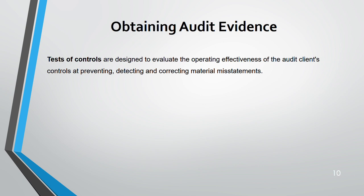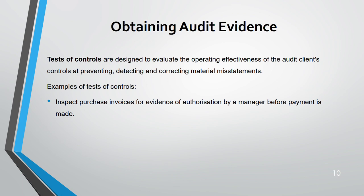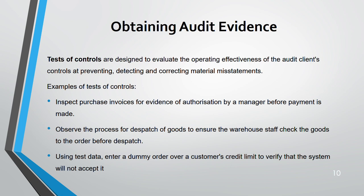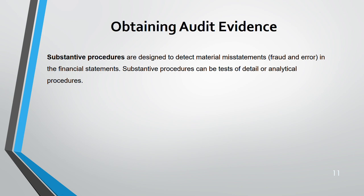Test of control is designed to check the operating effectiveness of controls. Examples include: inspecting a purchase invoice to see whether it is authorized by management before payment; observing the process of dispatch of goods to ensure warehouse staff check the goods against the order before dispatch; and using test data — entering a dummy order over a customer's credit limit to check that the system rejects it, confirming the system is working correctly.